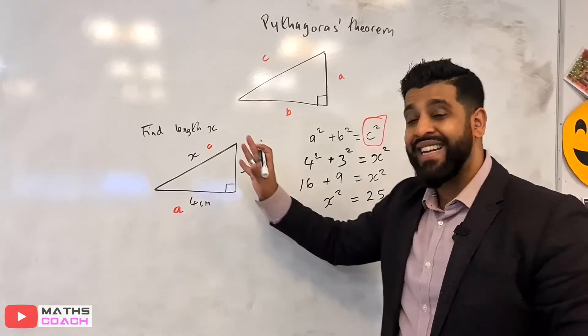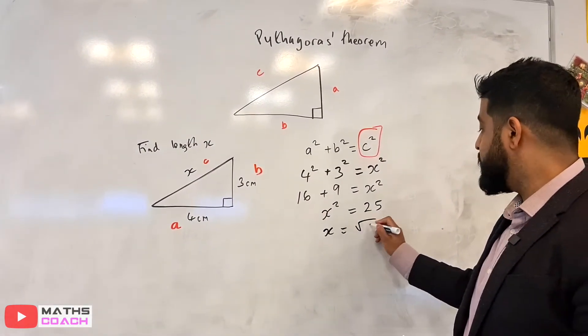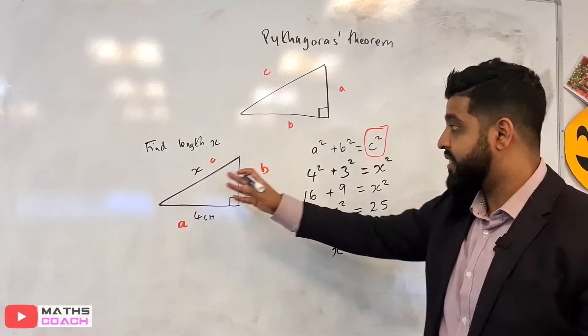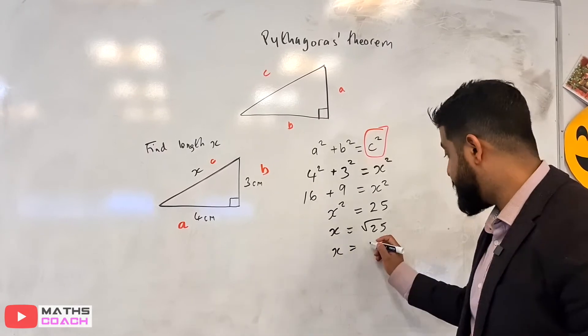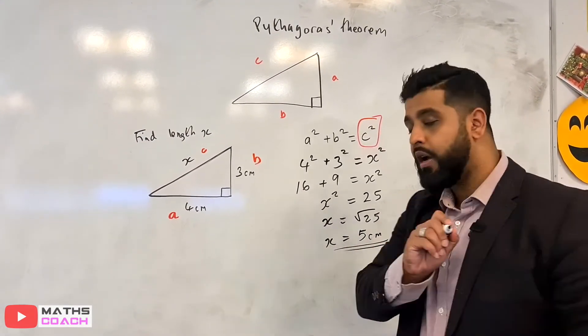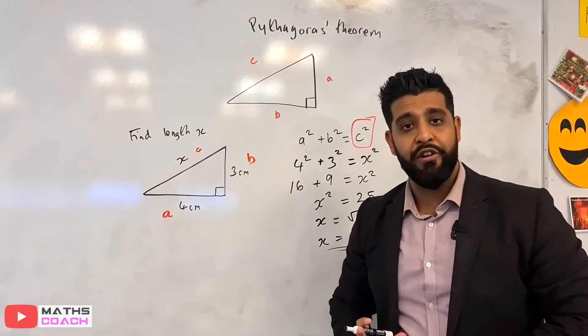But we want to find X, we don't want X squared, so X is going to equal the square root of 25. And we only need to take the positive square root because X is a length and we can't have minus 5. So it will be 5 centimeters. That's quickly how it was applied to a very basic question.